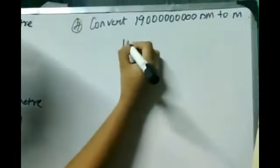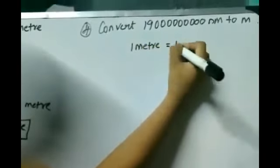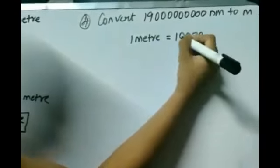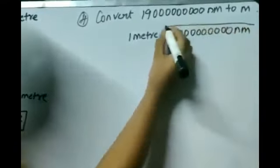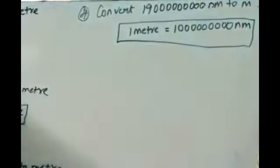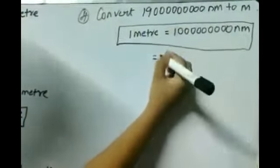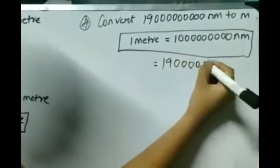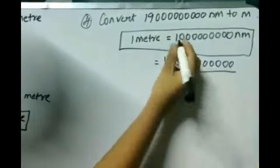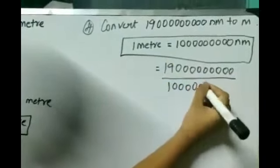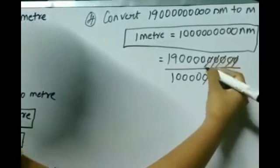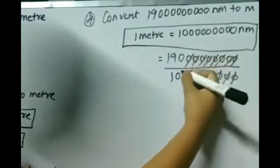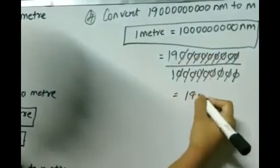Next example: convert 19 followed by 9 zeros nanometers to meters. We know that 1 meter equals 1 followed by 9 zeros nanometers. To convert nanometers to meters, divide the value — 19 followed by 9 zeros — by 1 followed by 9 zeros. Cancel all the zeros and you get 19 meters.